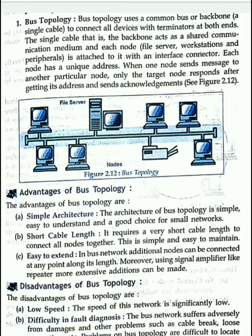The location in an office — you can find the network where it is connected; that is called network topology. First, we will read about bus topology. Bus topology is mostly used in general. In bus topology, there is a main cable.